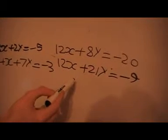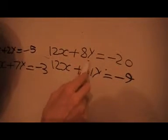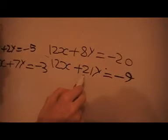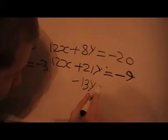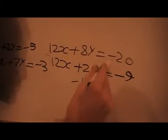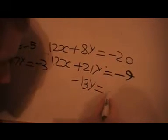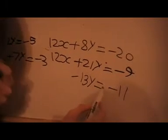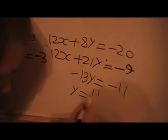So this can be a little bit nasty. We'll get 8y minus 21y, which is going to be minus 13y. And then I've got minus 20, and I'm subtracting minus 9, so I get minus 11. So then what I'm doing is here, I'm dividing both of these by negative 13, so then I get y equals 11 over 13.